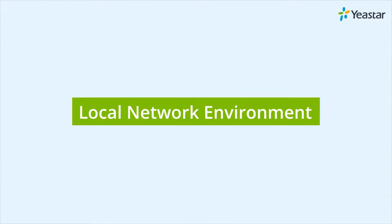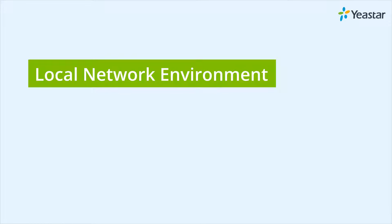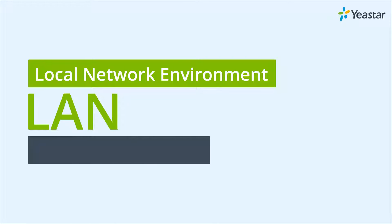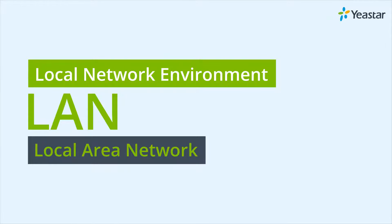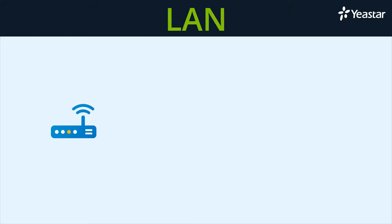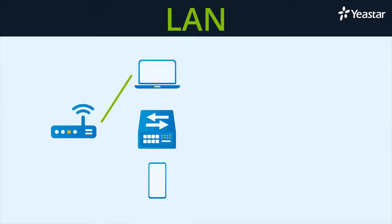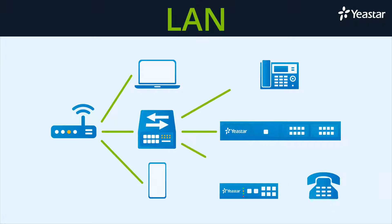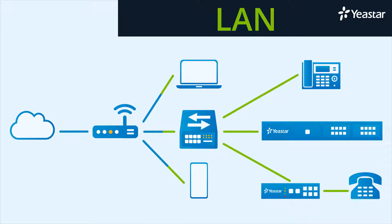What's a local network environment in the office? In simple words, the local network environment — professionally called LAN, or local area network — consists of a router and devices connected to it, such as your computer, smartphone, or any type of IP-based equipment. Usually, switches will be deployed to connect more devices to the router. If we connect broadband to the router, all the devices will be able to access the internet. A router is more like the main port that controls the traffic to the outside world.